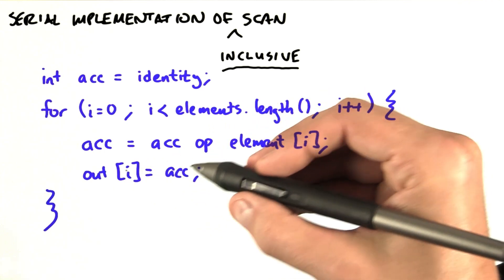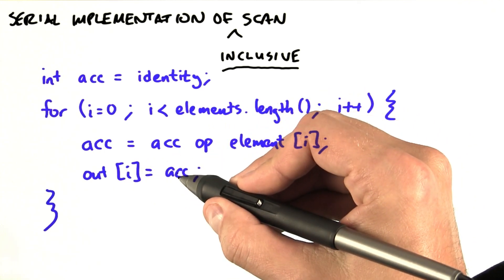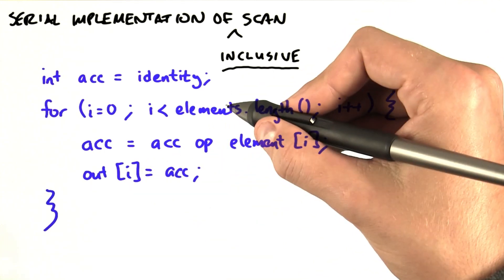Then we're going to set the output element at this particular position equal to the accumulator, then move on to the next element.